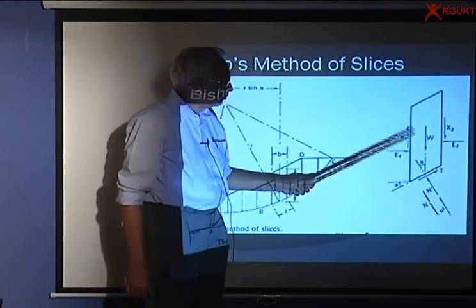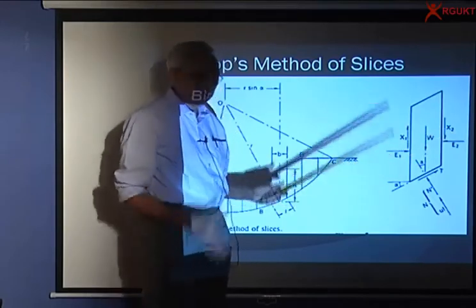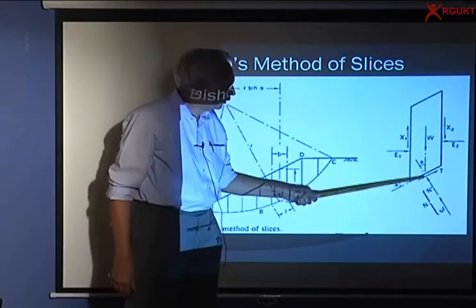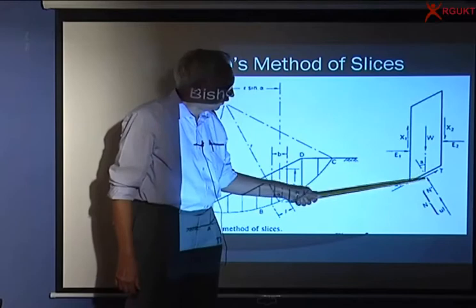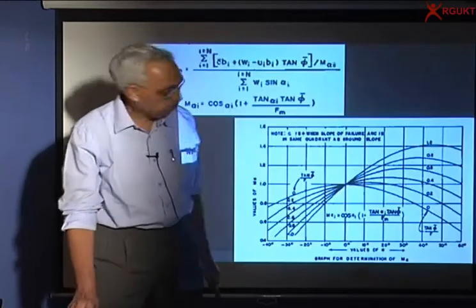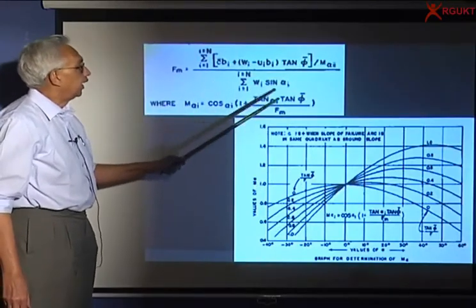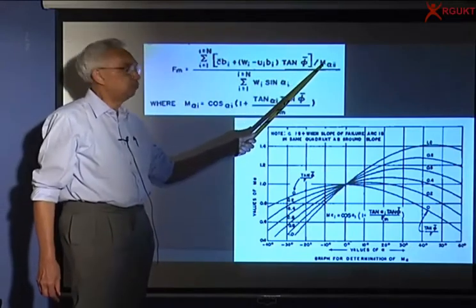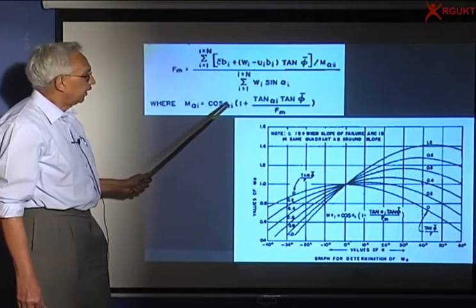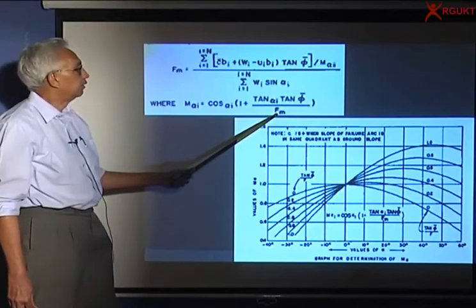Now what we do in Bishop's method is, in order to account for, first we neglect X1 and X2. We do not, that is the simplified method, and we try to take equilibrium of forces in the vertical direction, in which case I don't even have to look at E1 and E2. So I get the factor of safety in this fashion, and what we have is this term, M alpha I, where M alpha I is equal to cos alpha I into 1 plus tan alpha I tan phi by friction angle mobilized F_m.